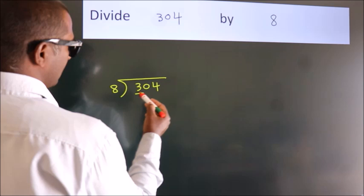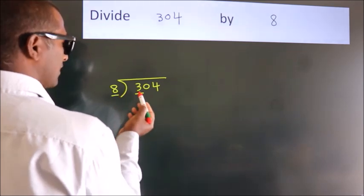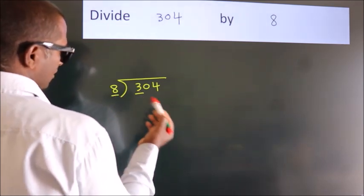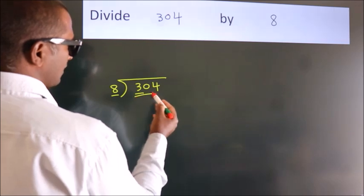Next, here we have 3. Here 8. 3 is smaller than 8, so we should take 2 numbers: 30.